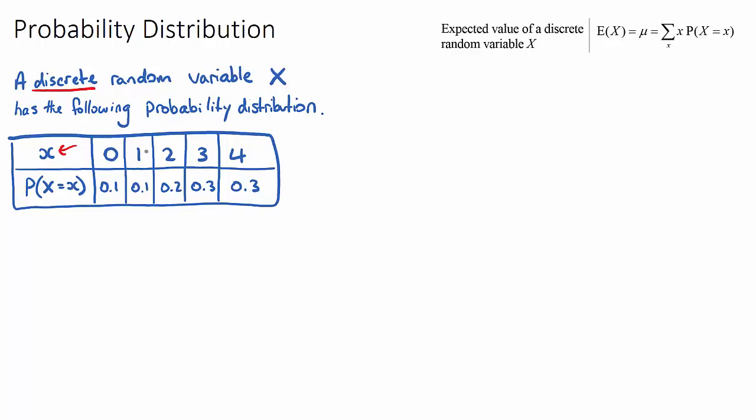So this top line is just going to be all of our possible outcomes, and the bottom line says, well the probability that our random variable, which is this capital X, which could be some randomly selected student, the probability that they get a certain score will change. Because looking at this example here, the probability that a randomly selected student gets a 0 is 0.1, and that's different to the probability of getting 4.